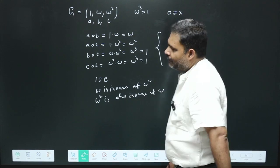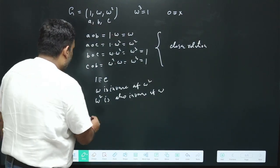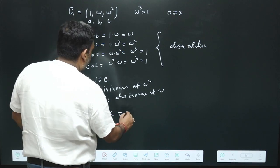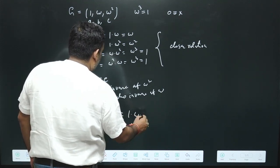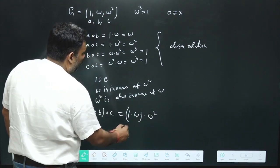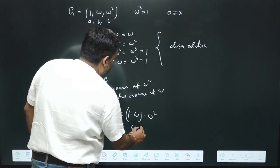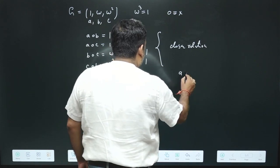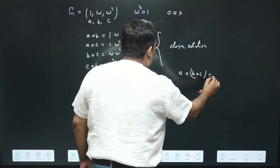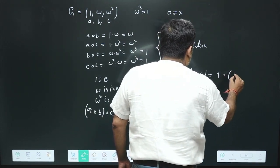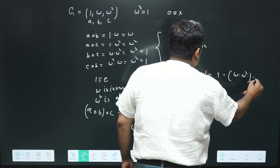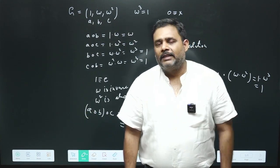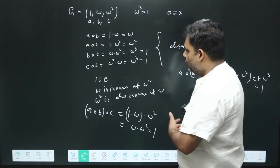Finally, we check the associative rule. We compute (a·b)·c: first a·b = 1·ω = ω, then ω·ω² = ω³ = 1. Then we compute a·(b·c): b·c = ω·ω² = ω³ = 1, so a·(b·c) = 1·1 = 1. Both give the same result, so the associative rule is satisfied.